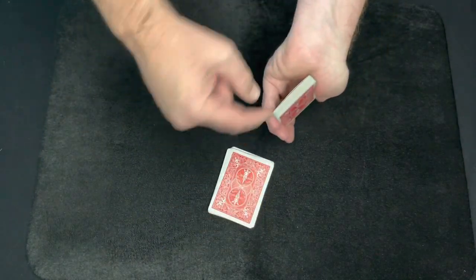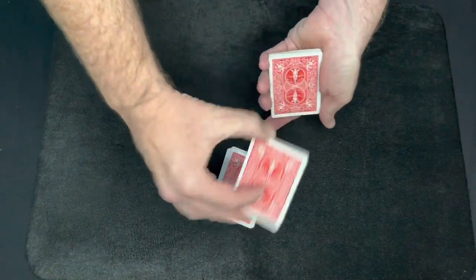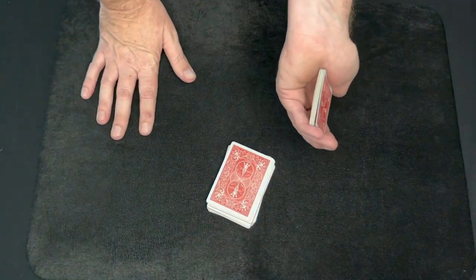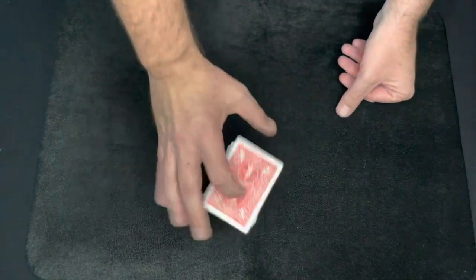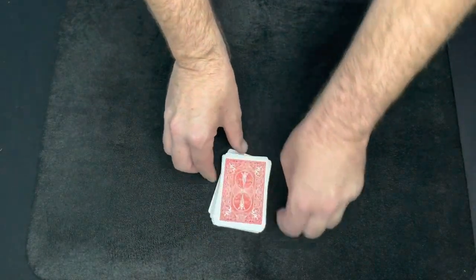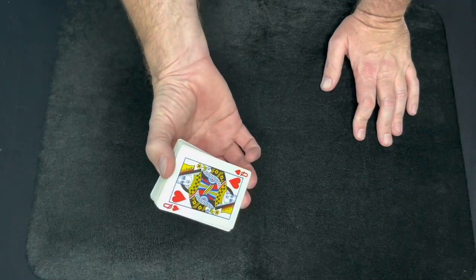And then this remaining packet that you have in your hand, just half of it, cut it and place it on top of that stack. And then the remainder, just place them on top of that just like that. Square it up, now you have their card on the bottom.